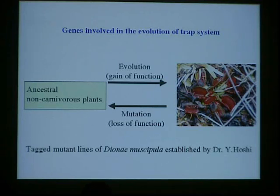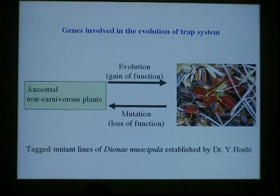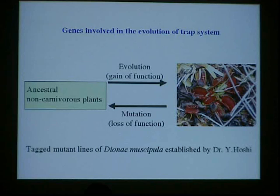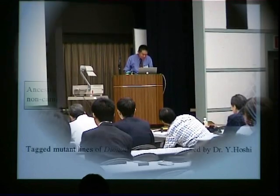At the molecular level, nobody can yet determine what genes were involved in the evolution of trap systems. We hypothesize that trap systems evolved by gain of function — meaning some genes acquired a new function and the trap system evolved. If so, when we disrupt the gene by mutation, carnivorous plants will lose their trap system and become similar to a non-carnivorous plant.